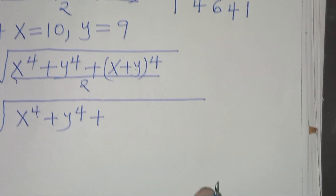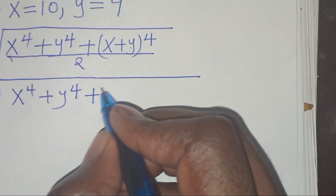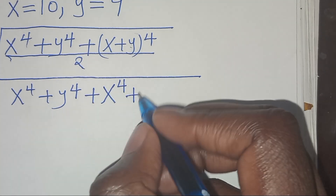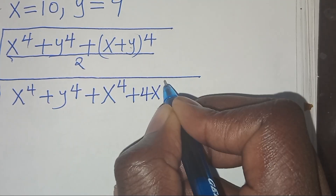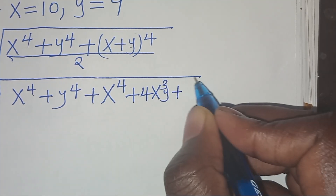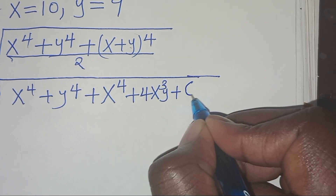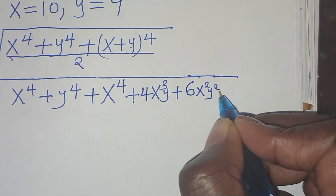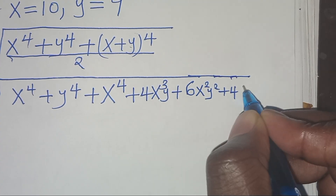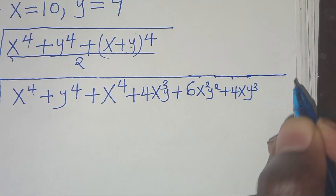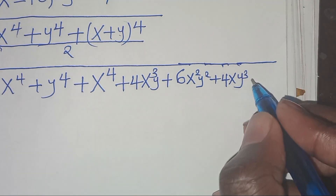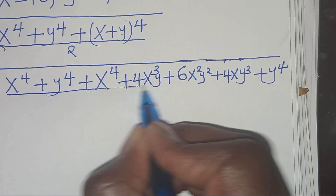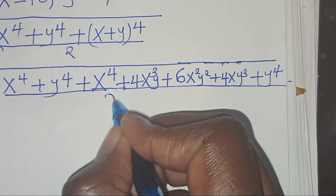So now here we have x to power 4, plus 4x to power 3 y, then plus 6x to power 2 y to power 2, then plus 4xy to power 3, then plus y to power 4, all divided by 2.